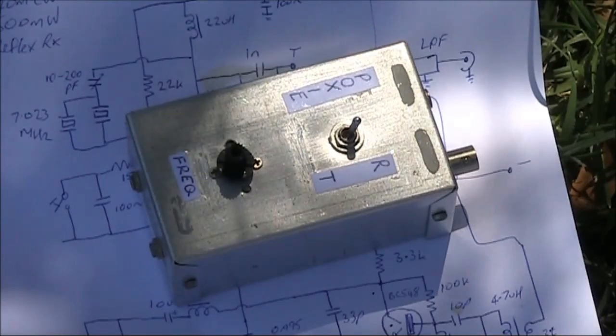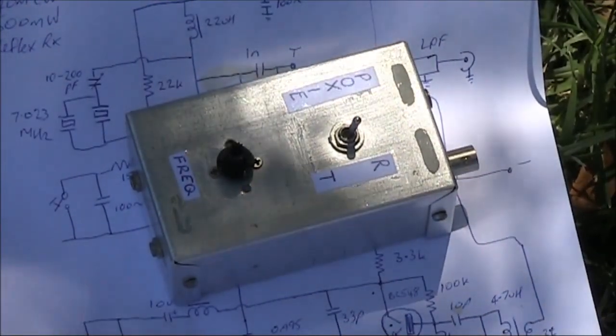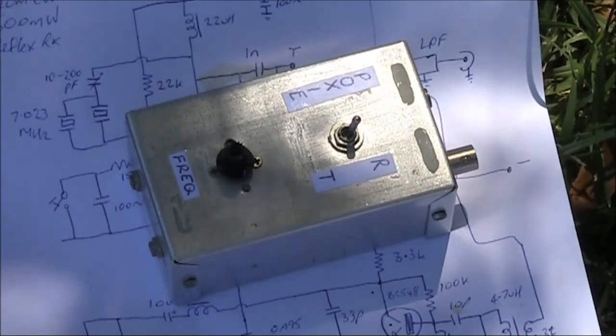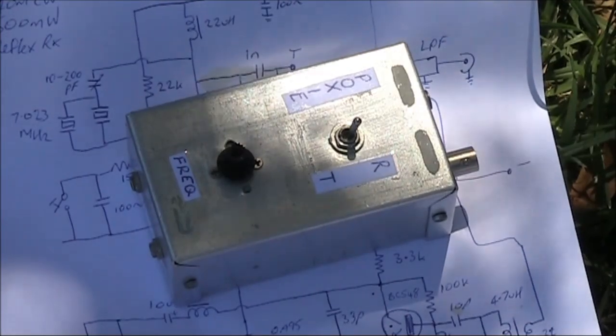An introduction to a transceiver I've called the POXY. Just two active devices, but it can transmit a few hundred milliwatts of CW on 7MHz.